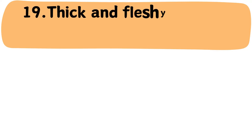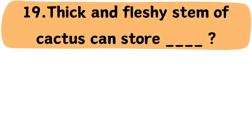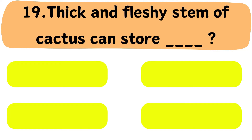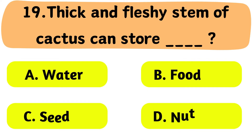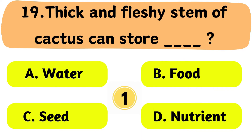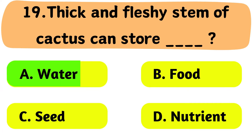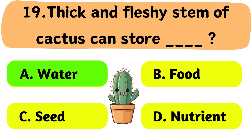Question No. 19: The thick and fleshy stem of a cactus can store what? A. Water. B. Food. C. Seeds. D. Nutrients. The correct answer is Option A: Water.